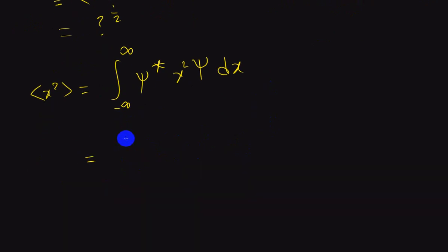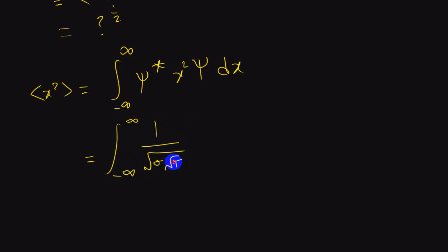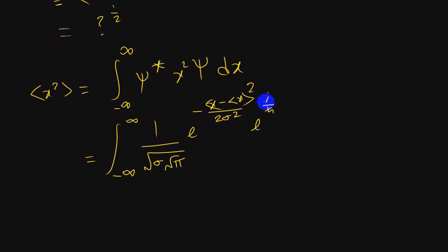So psi star times psi is none other than 1 over sigma root pi, times e to the minus x minus the expectation value of x, squared, over 2 sigma squared. Then we have e to the minus i over h-bar term.